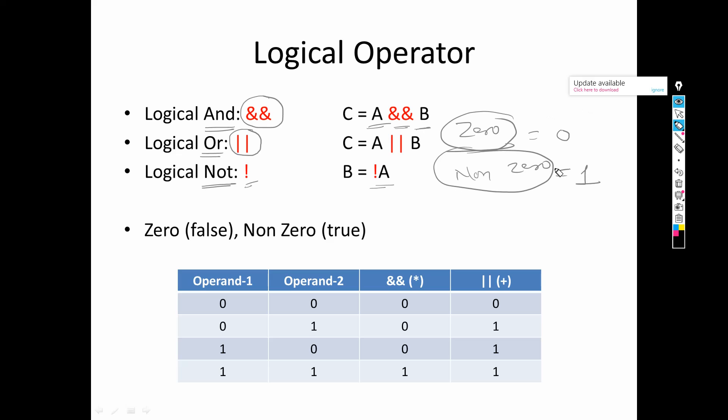Let's understand this idea of zero and one. If I write 10, it is non-zero, and a non-zero value is considered as one. If I write minus 10, it is again non-zero, so it is considered as one. If I write zero, it is zero and is considered as zero. So any value other than zero is considered as non-zero and represented as one — whether it is 10,000, five, minus 10, or minus 125. Any non-zero value is represented as one.